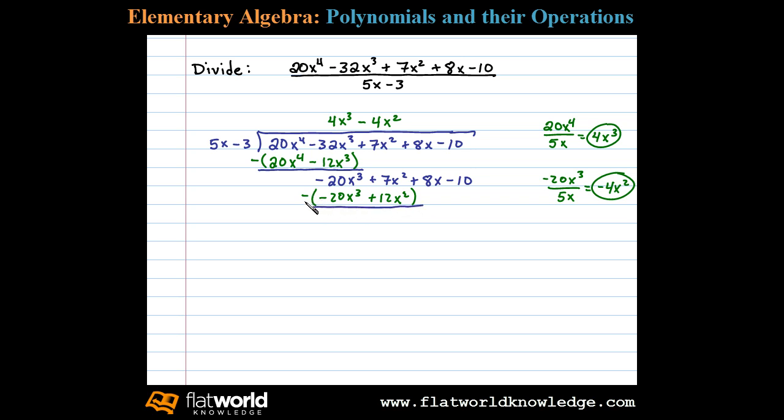In this case, negative 20x cubed minus negative 20x cubed is zero. When we subtract positive 12x squared from 7x squared, we obtain negative 5x squared. Then we bring down the rest of the terms, plus 8x minus 10.